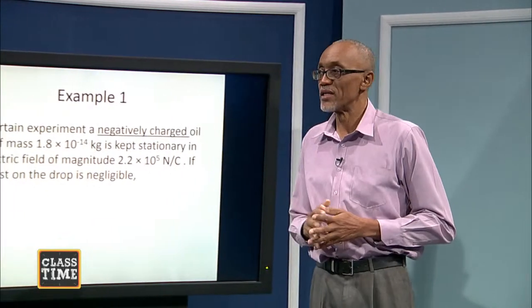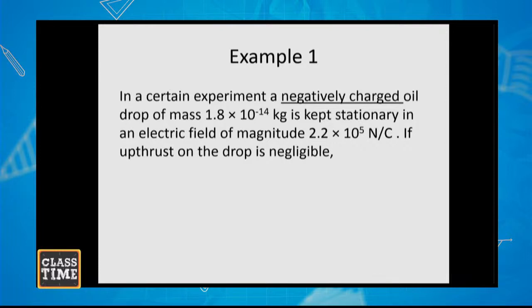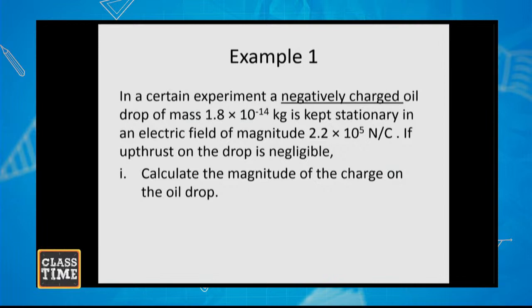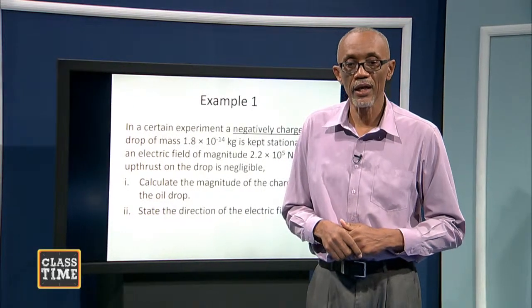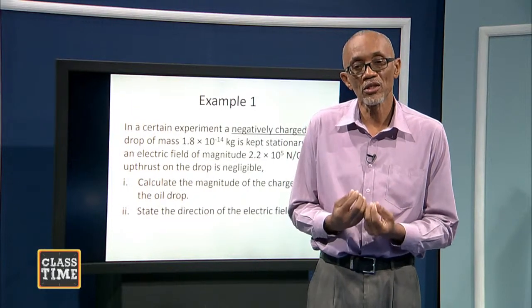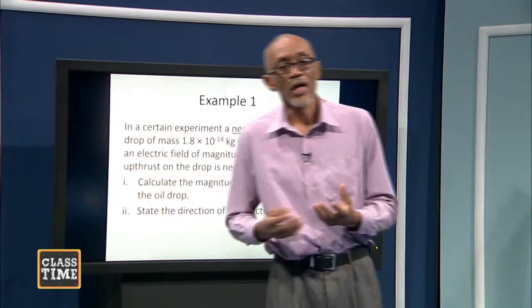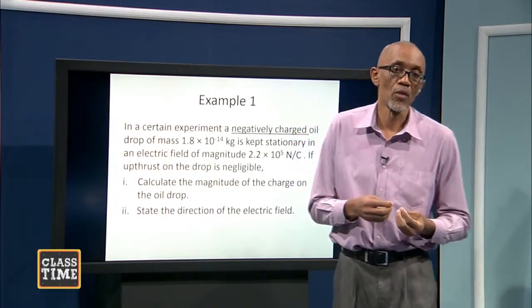In a certain experiment, a negatively charged oil drop of mass 1.8 × 10⁻¹⁴ kg is kept stationary in an electric field of magnitude 2.2 × 10⁵ N/C. If the upthrust on the drop is negligible, calculate the magnitude of the charge on the oil drop and state the direction of the electric field. This comes from Millikan's oil drop experiment, in which a charged drop of oil is suspended in an electric field to determine the value of the charge on the drop.